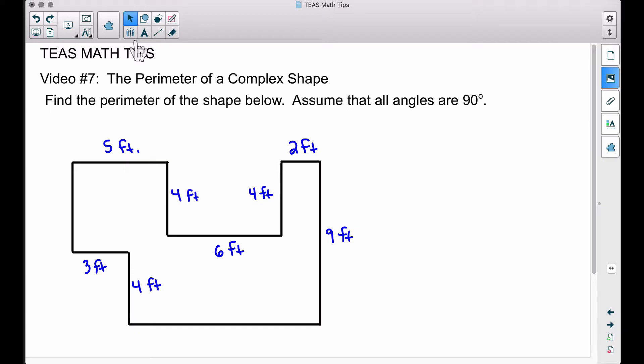All right, in this video, this is video number seven of the TEAS Math Tips. We want to find the perimeter of a complex shape. The directions say: find the perimeter of the shape below, assume that all angles are 90 degrees.